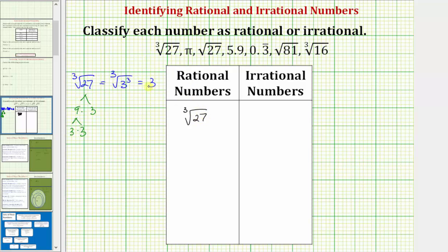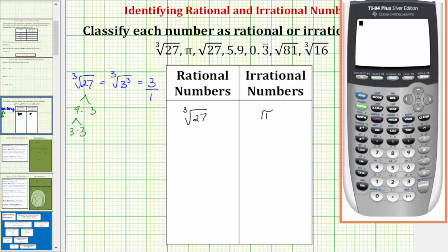Notice how we could write three as three over one, which would be the form of A over B, where A and B are integers. Next we have pi, which is a very famous irrational number. In decimal form, the decimal is non-terminating and non-repeating. Looking at this on a calculator, if we enter pi, the calculator only gives us a certain number of decimal places. But this decimal would continue forever, and notice how it is not repeating, which is the reason why it's irrational.